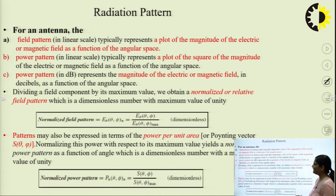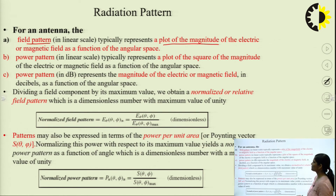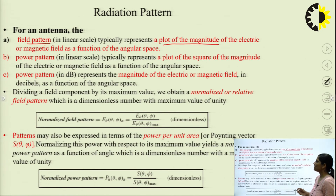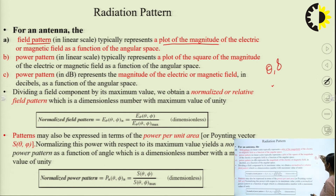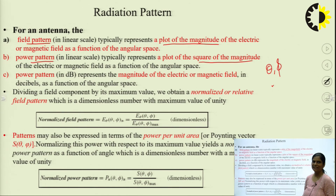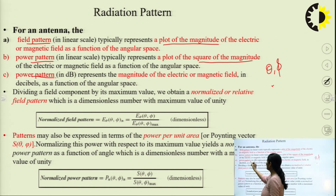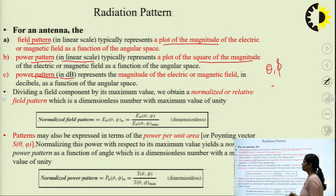For an antenna, the field pattern represents a plot of the magnitude of the electric or magnetic field as a function of angular space — the radiation received when transmitting from transmitter to receiver, measured in terms of theta and phi. The power pattern is a plot of the square of the magnitude of the electric and magnetic field as a function of angular space, represented in linear scale or in dB.